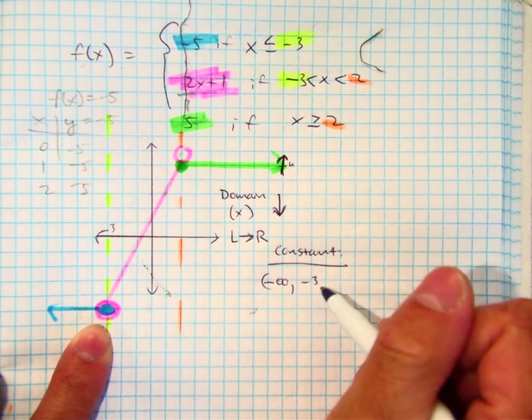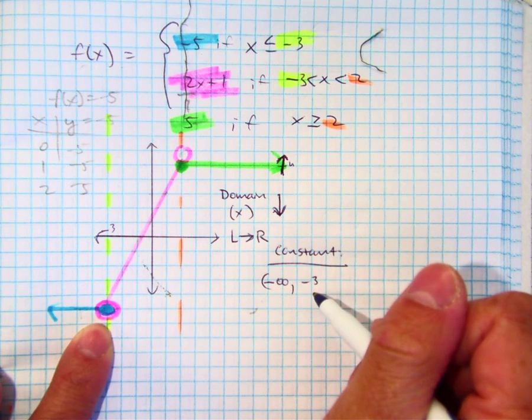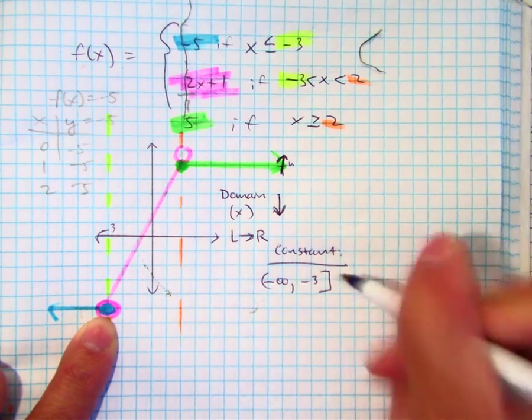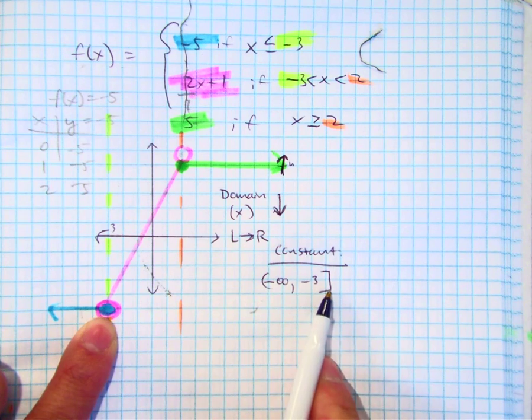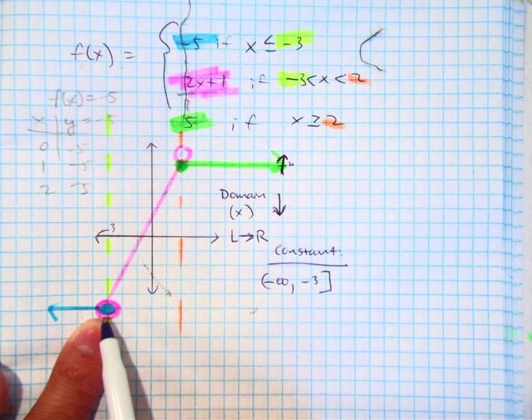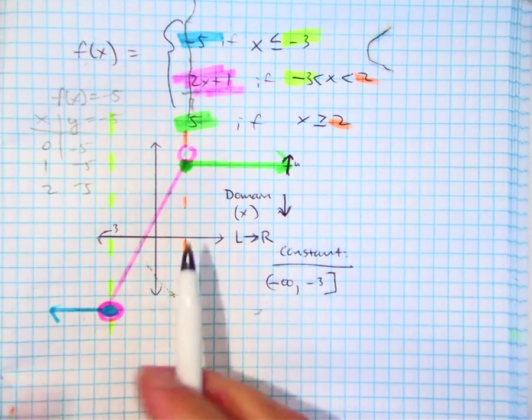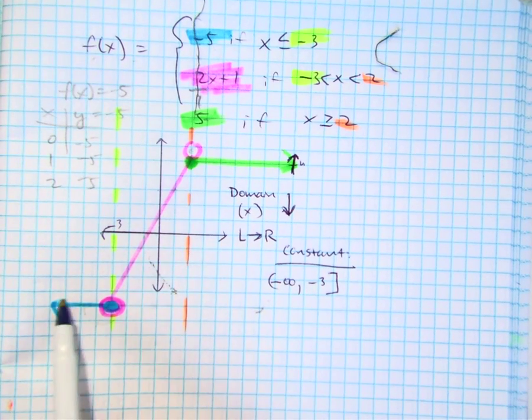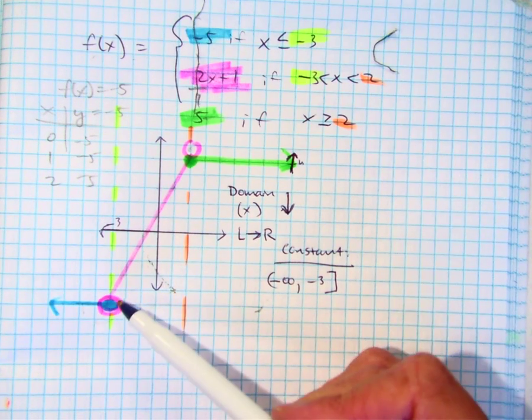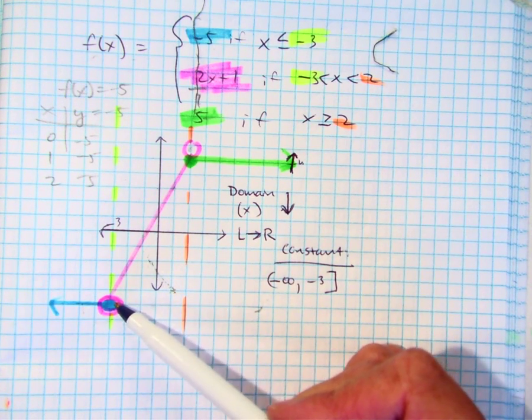Should you include negative three? Yes. Because remember, you're including it because it's not increasing, it's not decreasing there. Right? You hit your roller coaster, boom. Then your heart starts pounding, right? What happens next?